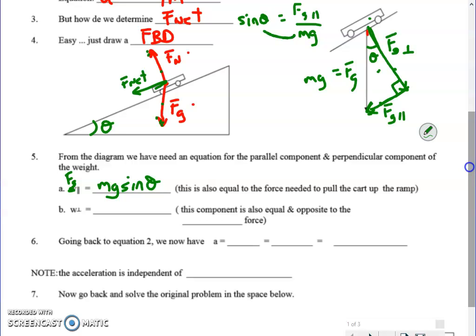So if I do sine, I could say the sine of that angle in the triangle is opposite which is Fg parallel over hypotenuse which is Fg which I'm going to equate to mg. So if I move the mg over here that's where the mg sine theta comes from.